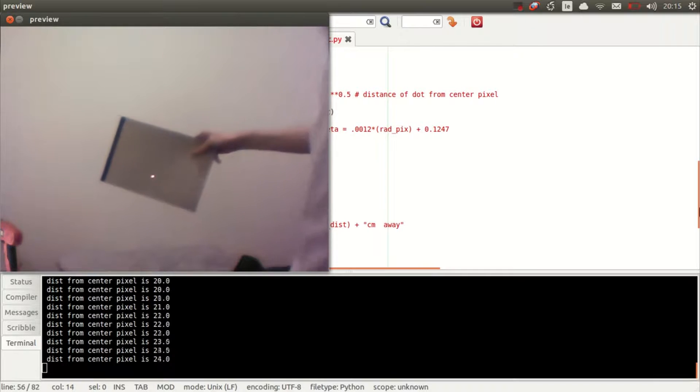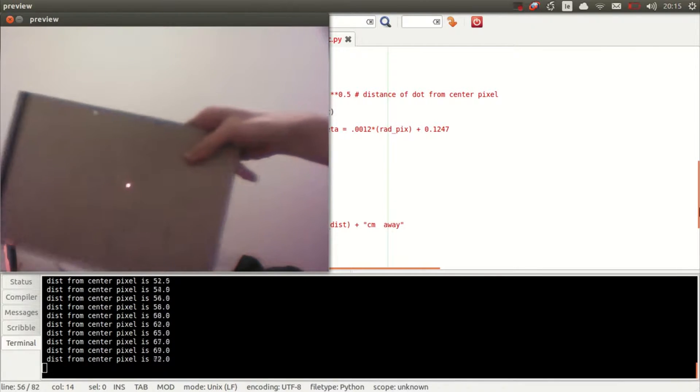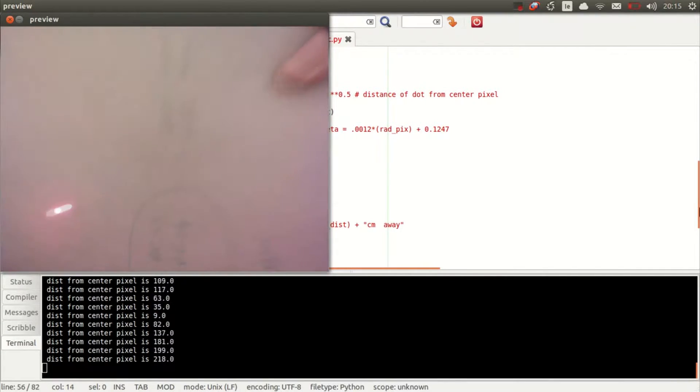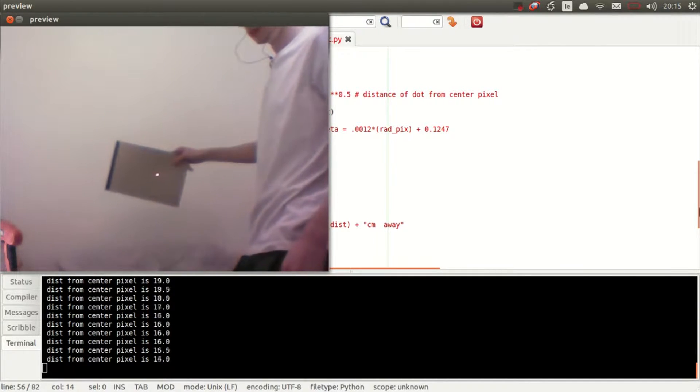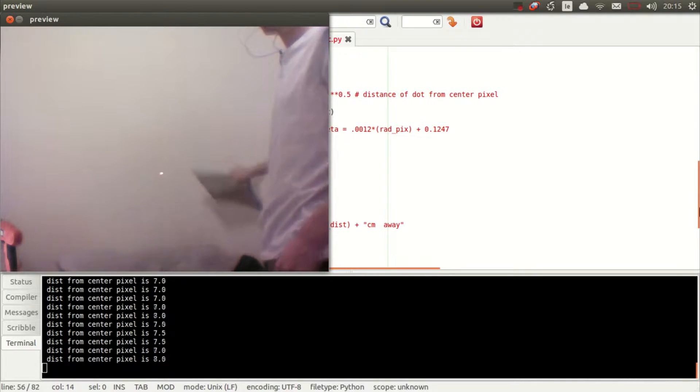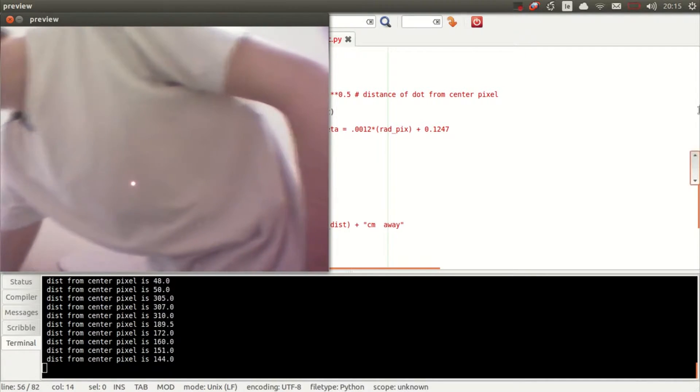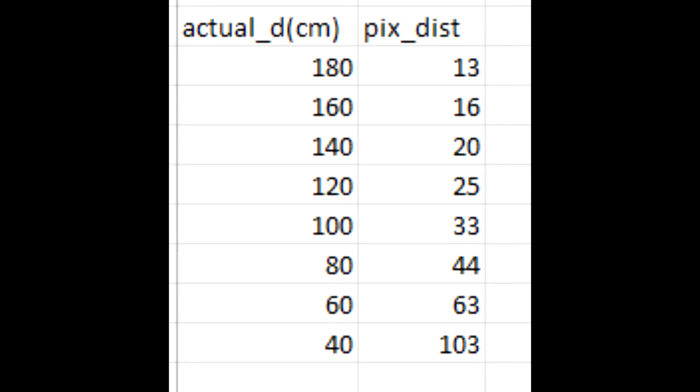You get out a measuring tape, step back say one meter, 1.5 meters, 2 meters, 2.5, 3. You want to get about say 10 measurements, so whatever increments you need to go up in. Then you get your actual d, that's what I call it, it's in centimeters. And at the same time you have a computer program running that's looking for pfc, or as I like to call it pixel distance, which is how far the laser is from the center of the image.